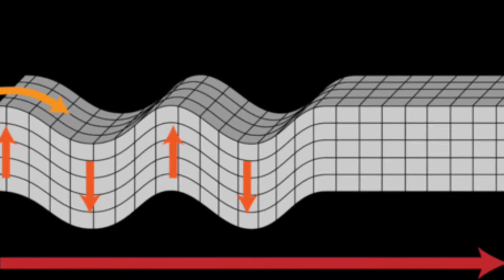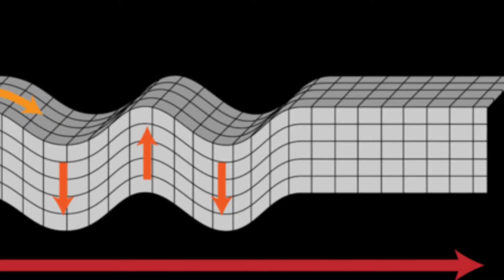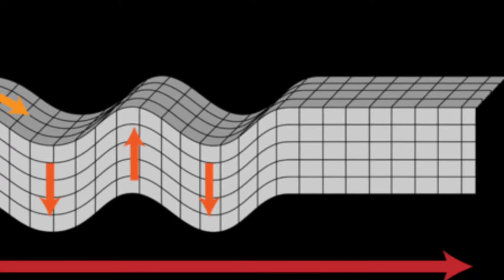Secondary waves are also known as shear waves. They are transverse in nature and arrive after the faster-moving P waves, or primary waves. They displace the ground perpendicular to the direction of propagation, only travel in solids, and their speed is usually around 60% of a P wave.